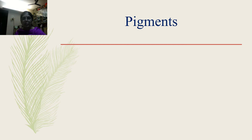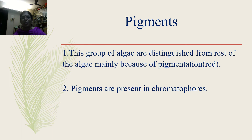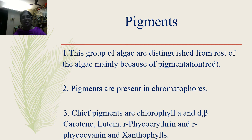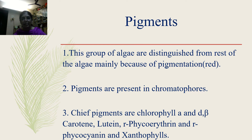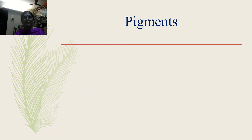Now let us concentrate on pigments. This group of algae is distinguished from the rest mainly because of its pigments — the coloration is red. Pigments are present in chromatophores. The chief pigments are chlorophyll A and D; chlorophyll B is completely absent. Beta-carotene, lutein, r-phycoerythrin, and r-phycocyanin are present. R-phycoerythrin and r-phycocyanin are predominant.